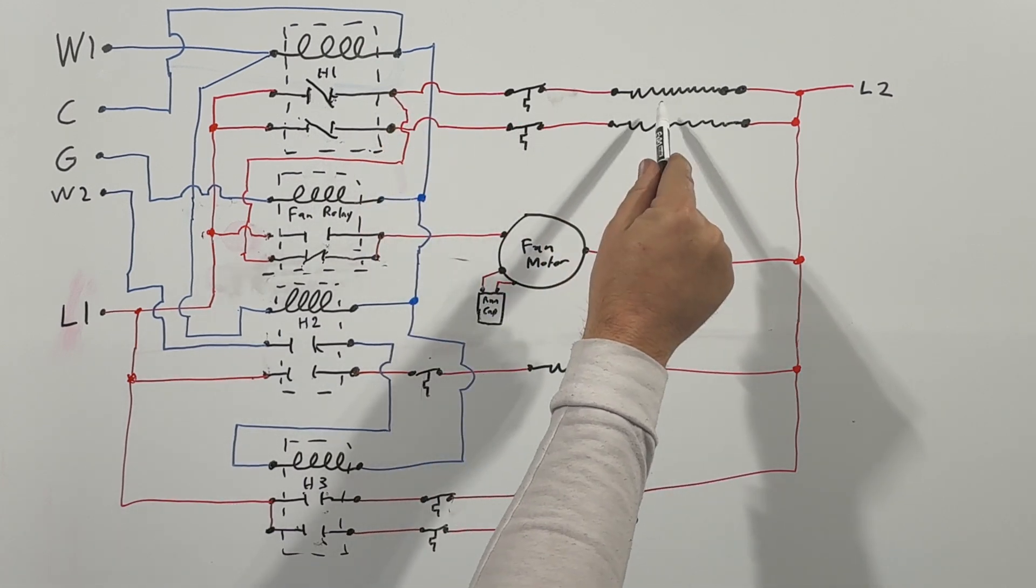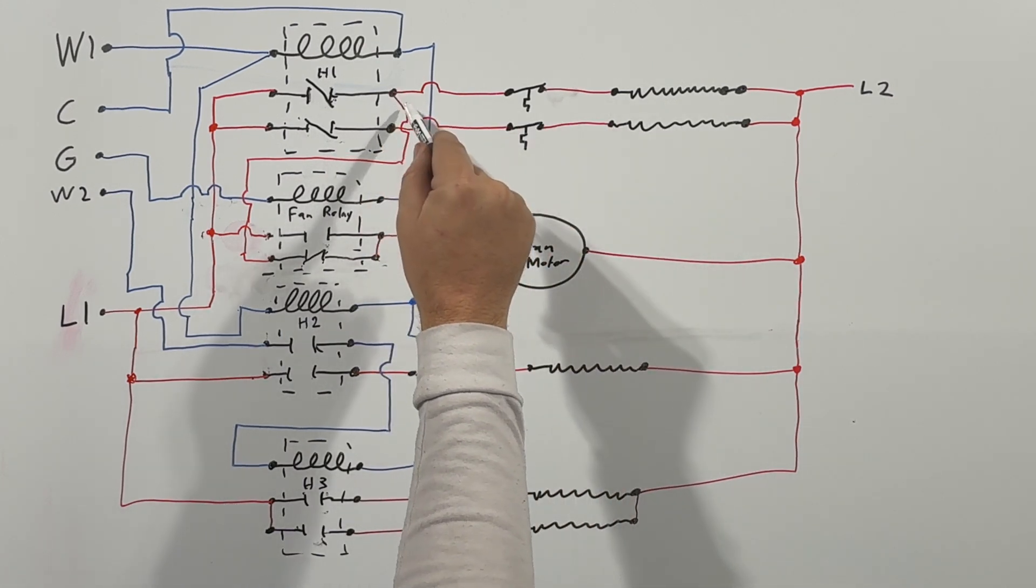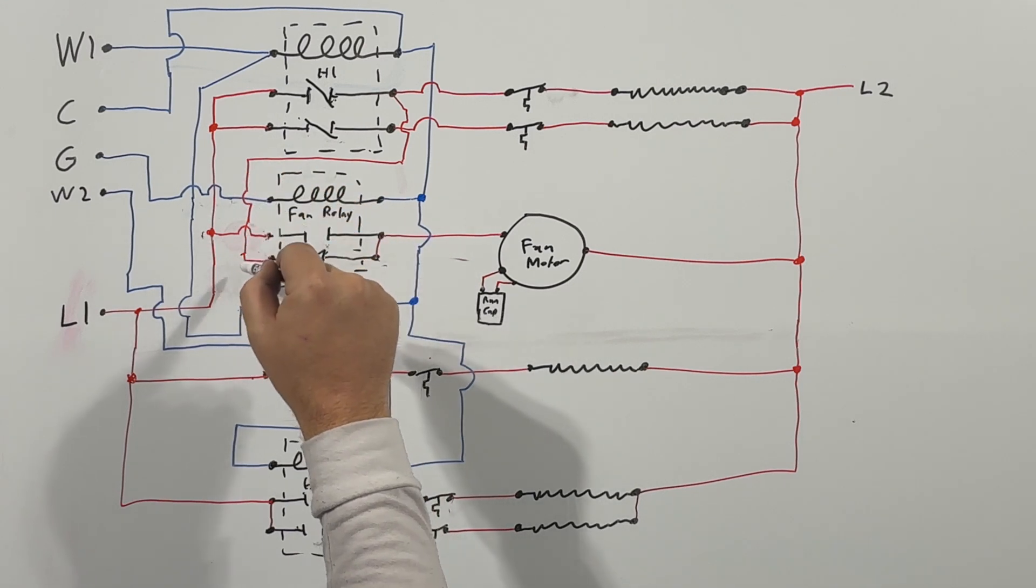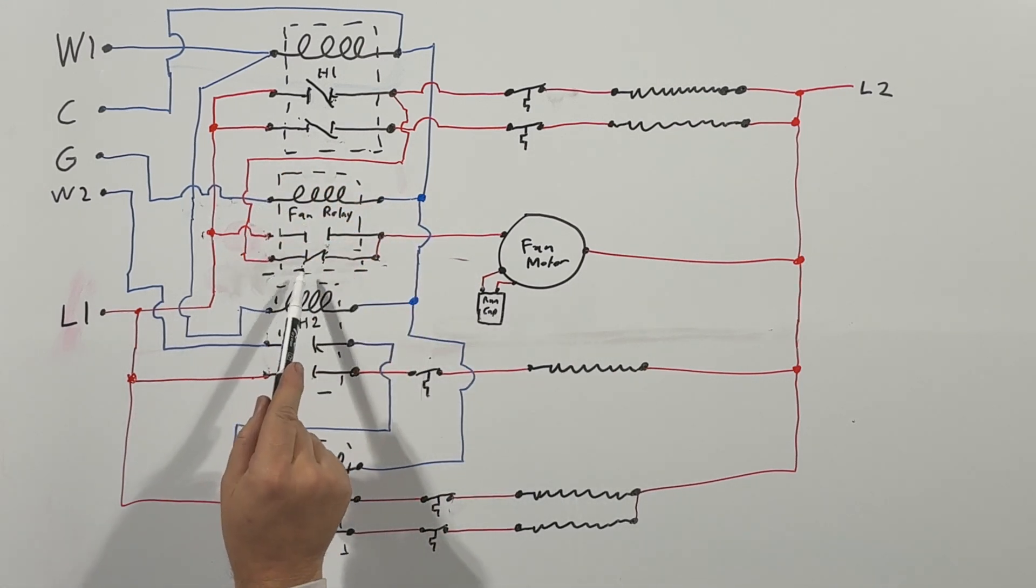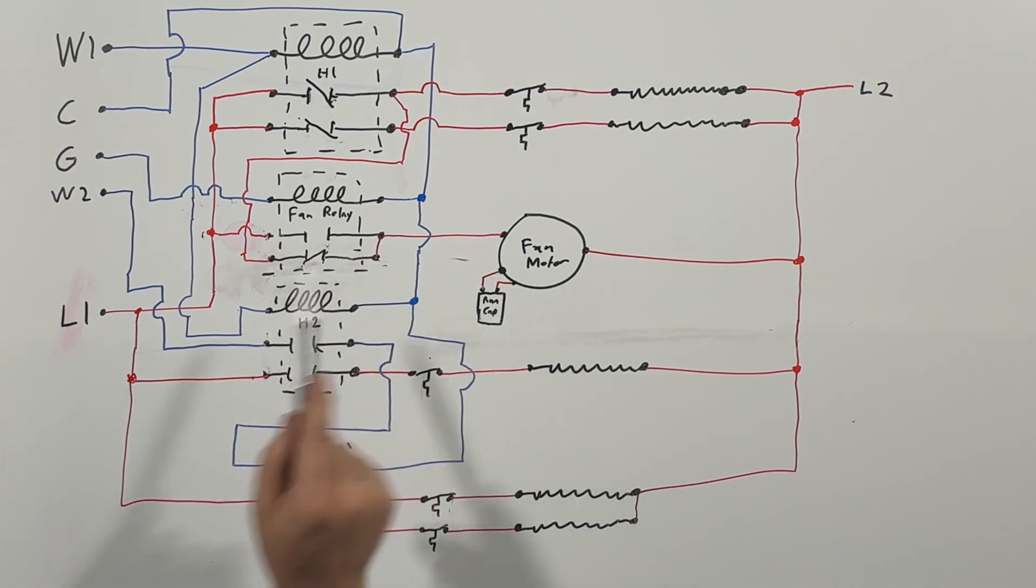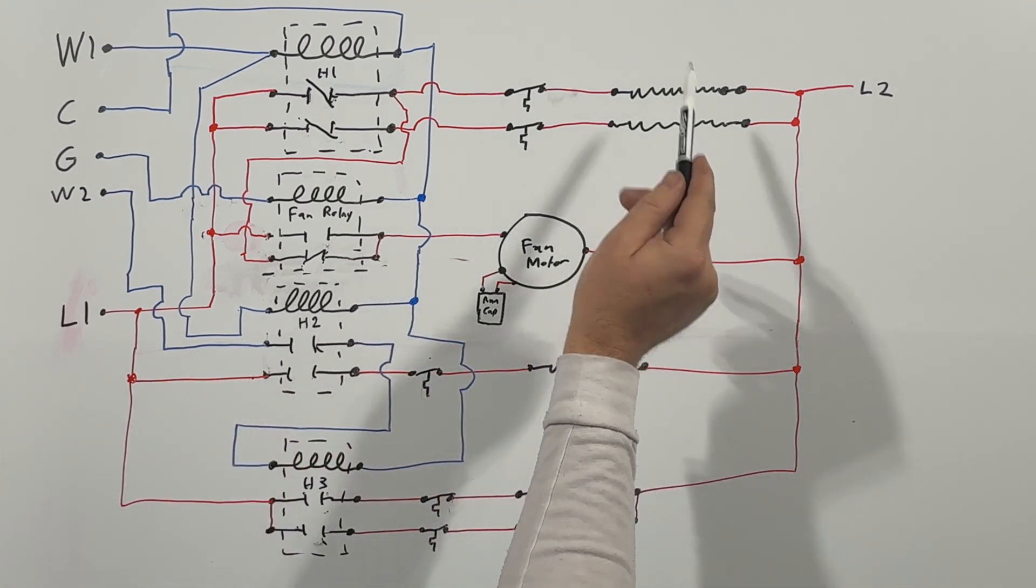And that's going to go into our normally closed contact. So high voltage will go through that contact and then go to our fan motor, which will energize the fan motor and that first strip at the same time.